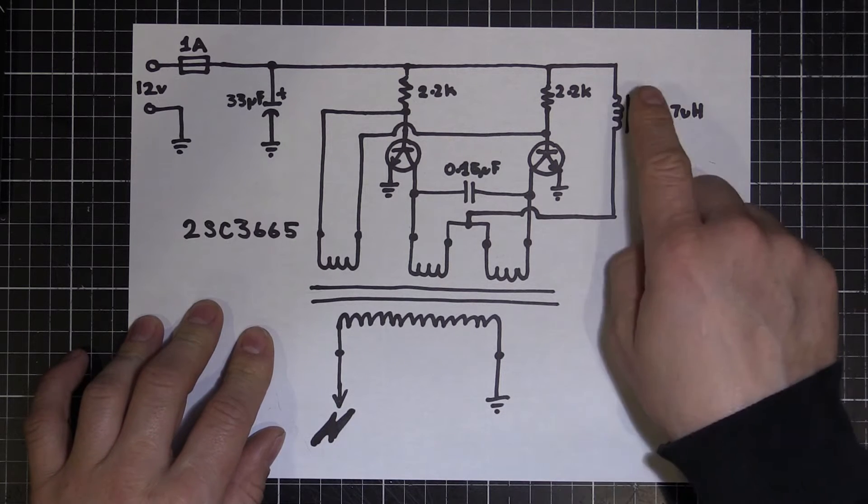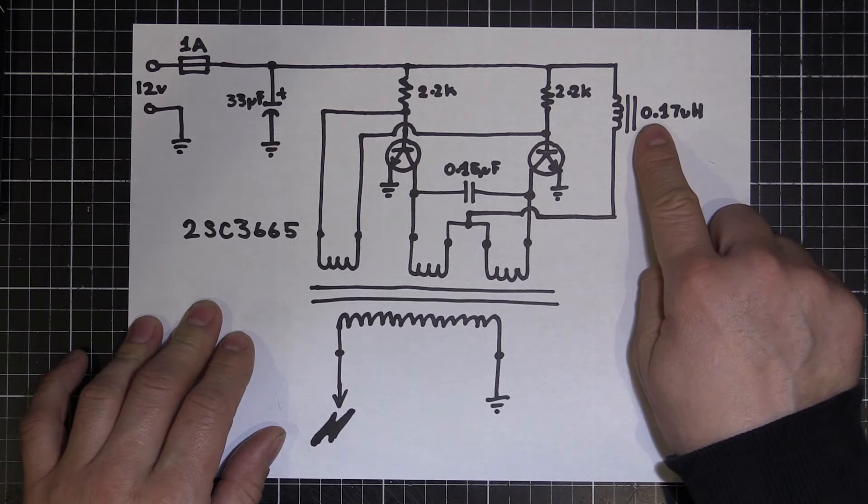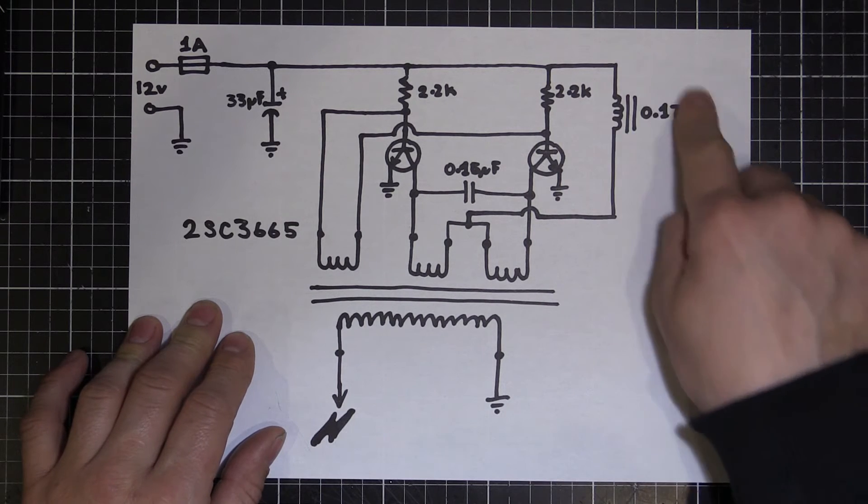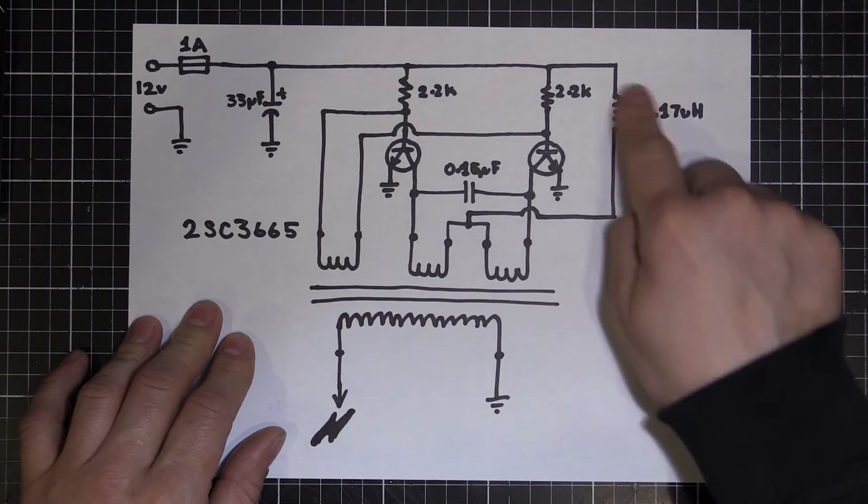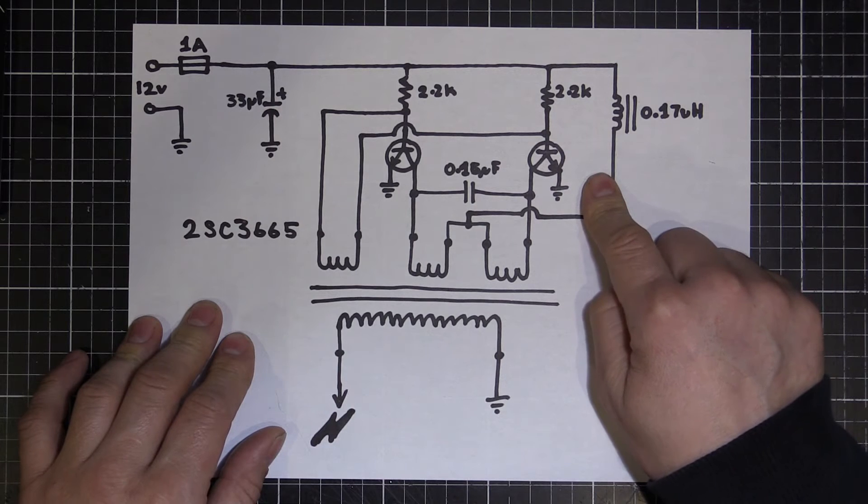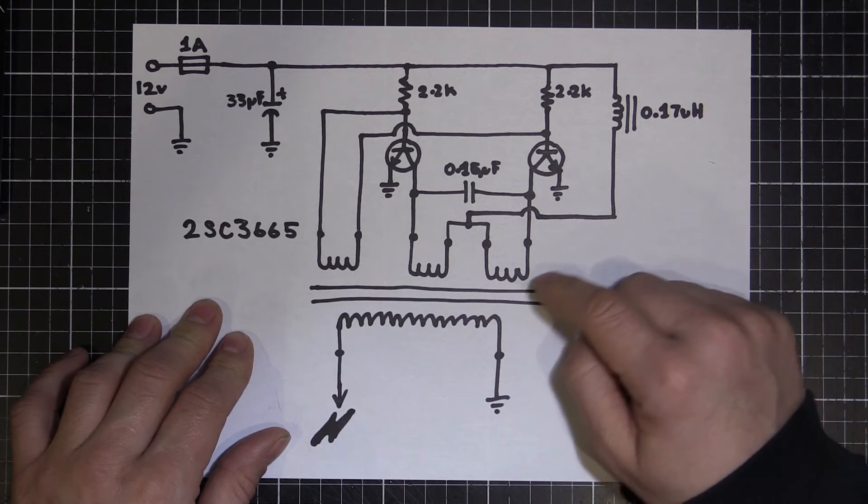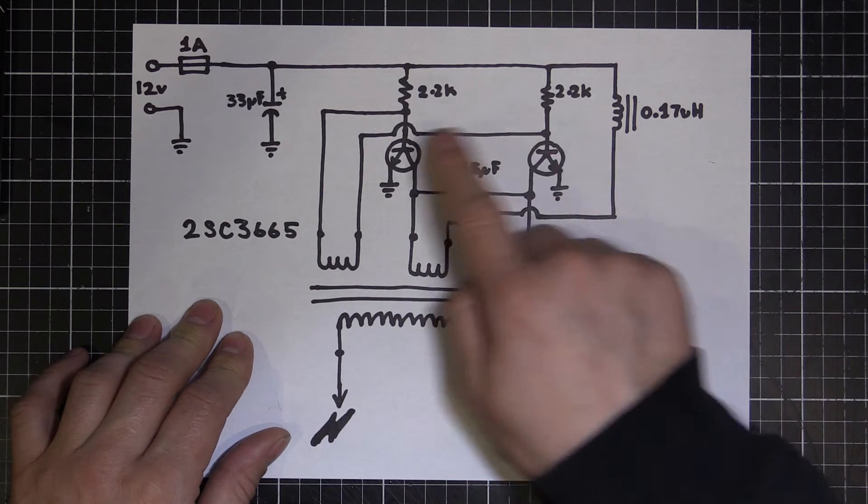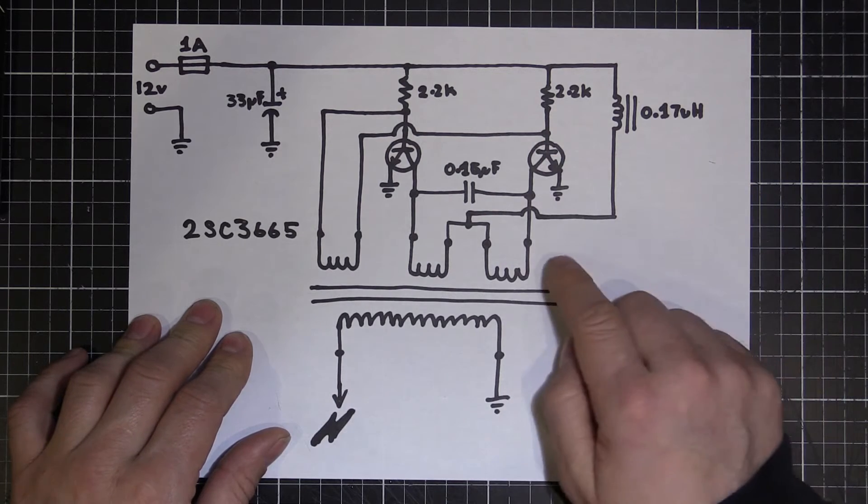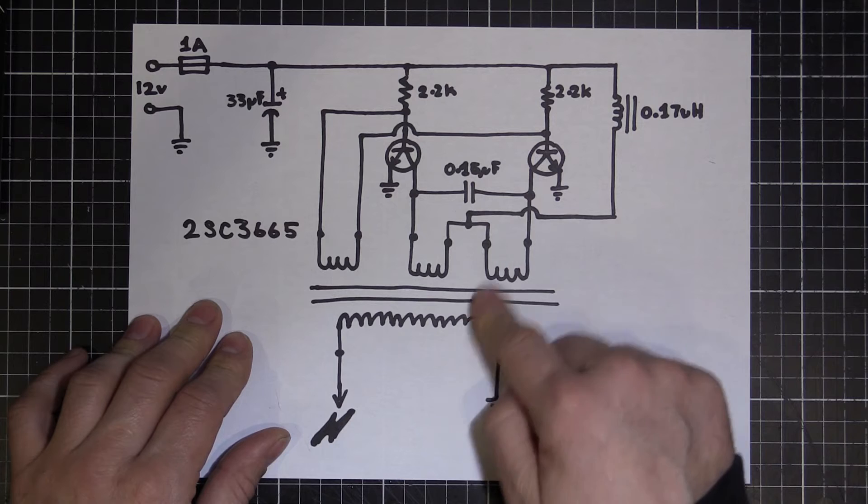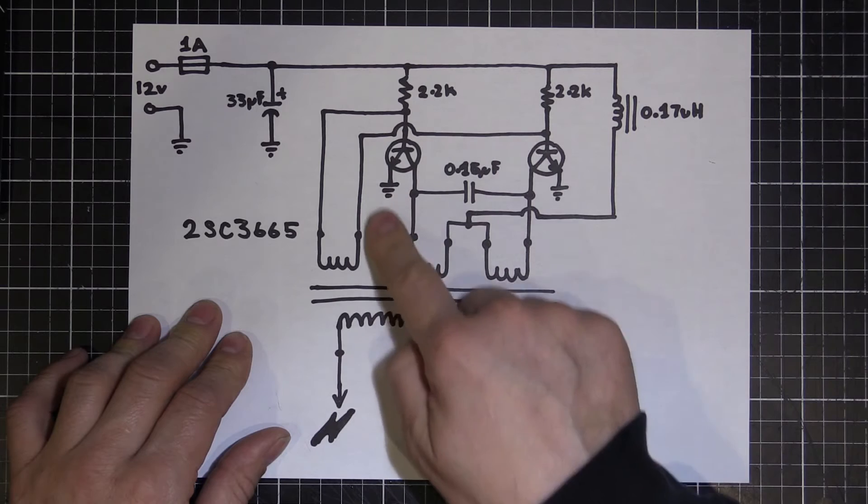So basically what's happening is the capacitor here, the 0.15 microfarad capacitor and the 0.17 microhenry inductor, they're acting as a resonant circuit through the transformer. This circuit here is resonating at about 83 kilohertz. 83,000 times a second. It's switching. And that's how fast these are being switched. So having a high frequency like that means you have a small transformer because the efficiency of the transformer goes up as your frequency goes up.